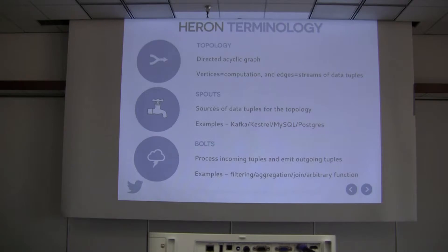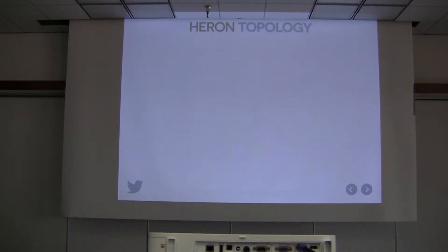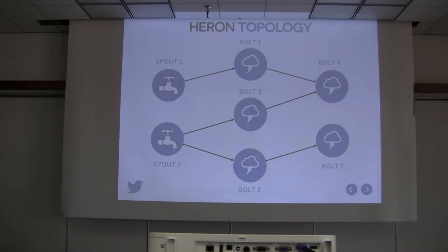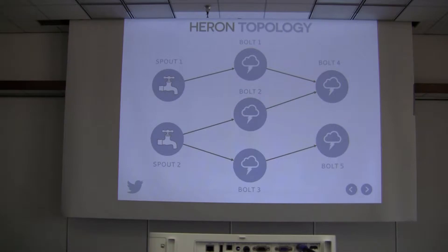With that short introduction, here's how a Heron topology looks. You have a couple of spouts tapping into data, feeding into the next stage of bolts — bolt one through bolt three — which transform the data and send it to the next stage, bolt four and bolt five. Bolt four is receiving two streams and performing some operation that combines them in an arbitrary way.